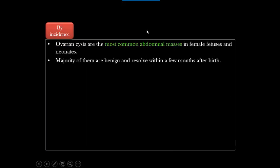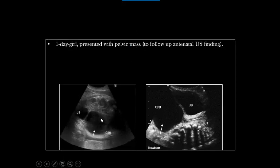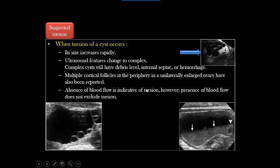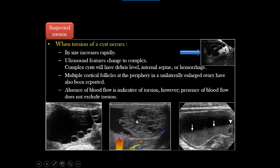A hemorrhagic ovarian cyst carries a high risk of torsion — as confirmed on surgery, where it was found to be a necrotic cyst due to torsion. In summary, the most common abdominal mass in a female fetus or female neonate is an ovarian cyst. Most cases are benign simple cysts that will resolve within weeks to months. However, if complications appear — such as fluid-debris level, reticulations, internal septations, absent vascularity, or excessive daughter cysts — these suggest the possibility of torsion starting in utero and possibly continuing